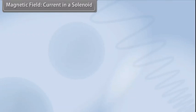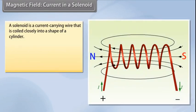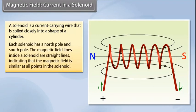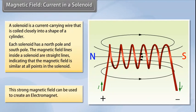Magnetic field current in a solenoid. A solenoid is a current carrying wire that is coiled closely into a shape of a cylinder with the turns as close together as possible. This is similar to a bar magnet. Each solenoid has a north pole and south pole. The magnetic field lines inside a solenoid are straight lines and indicate that the magnetic field is similar at all points in the solenoid. This strong magnetic field in the solenoid can be used to magnetize magnetic materials. This type of a magnet is called an electromagnet.